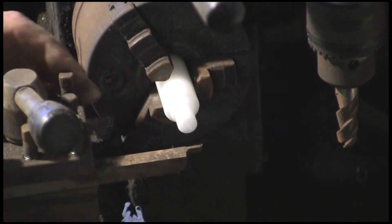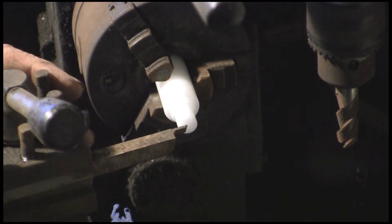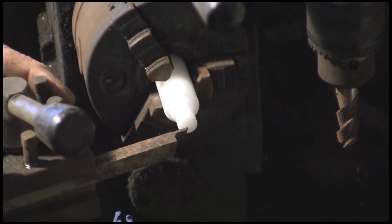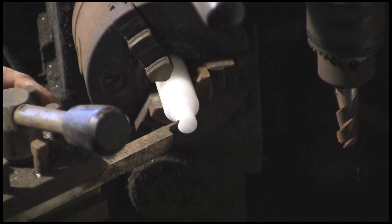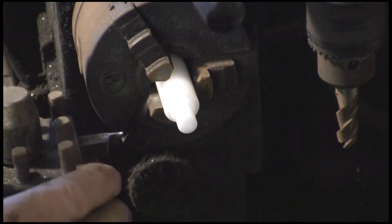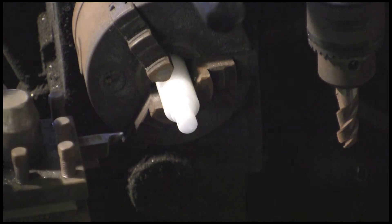So it will turn this tool post around. Get this parting tool out of the way. Get it wound around enough. Okay, and get the other bit of parting tool set up.